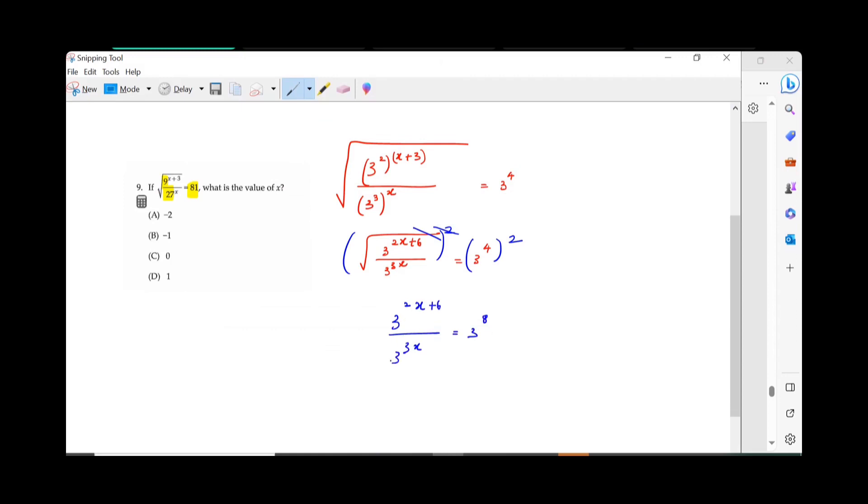So, what do you do whenever there is a division? You want to subtract. So, 2x plus 6 minus 3x equals 3 power 8.